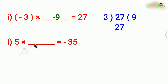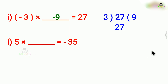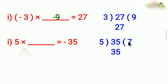If you look at the second problem: 5 into blank equals minus 35. The result is a negative number. In two numbers, one is negative. Since 5 is positive, the blank must be negative. 5 times 7 is 35, so the answer is minus 7.